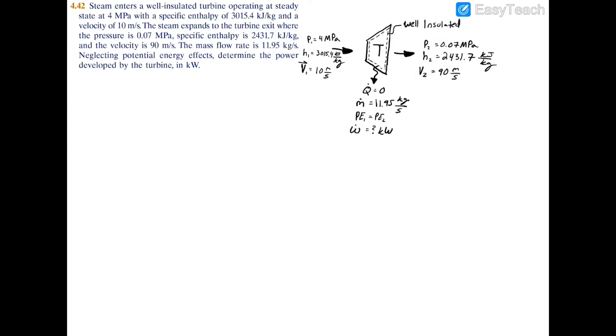We're given the mass flow rate and we're also told that potential energy can be neglected, PE1 equals PE2, and we're looking for the power of this turbine in kilowatts.